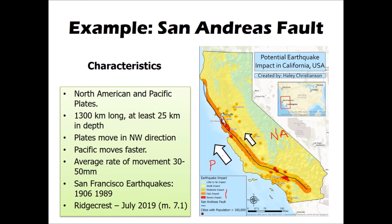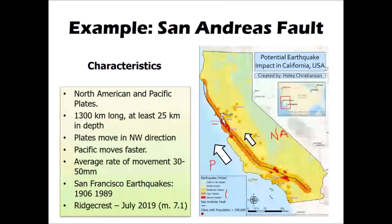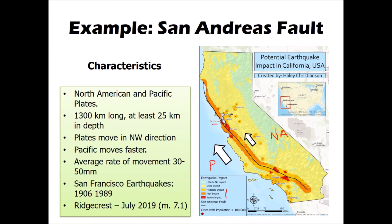Areas such as Los Angeles and San Francisco are particularly prone to shaking from earthquakes along this boundary. Some notable earthquakes have occurred there — San Francisco in 1906 and 1989 saw very devastating earthquakes, and more recently Ridgecrest, California experienced a magnitude 7 earthquake in July 2019. Los Angeles and San Francisco are the two cities with perhaps the greatest earthquake risk.